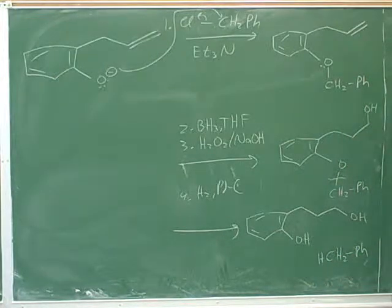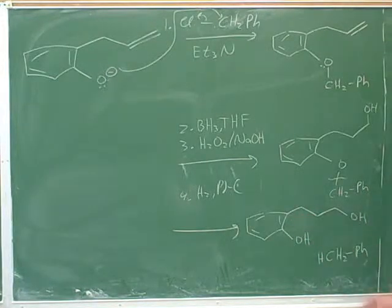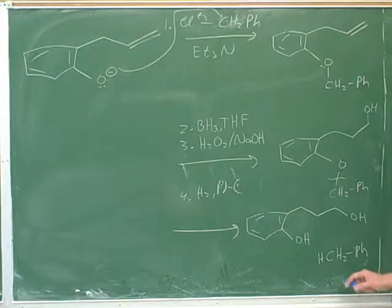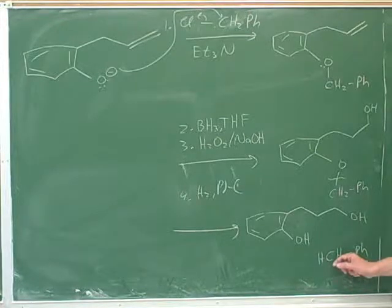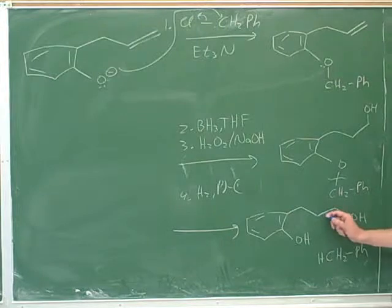So those would be, like on a test, they would list both of those as being the products. They could do it either way. Actually, in some cases they might leave this out, because what we really were trying to get was this, right? This was just a trick that we used. So they might or might not include this. You should know this product, but it might or might not be included. What we were trying to get all along was this.